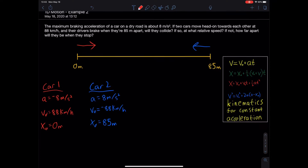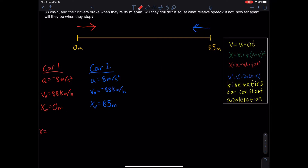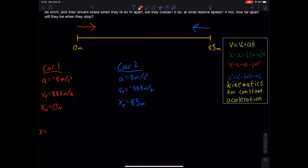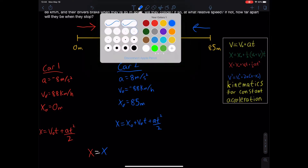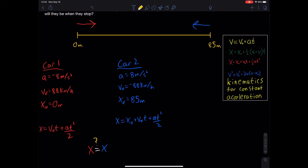The position function for car one is: x = v₀t + ½at² (initial position is zero). For car two: x = x₀ + v₀t + ½at². The question is whether red car one's position will ever equal blue car two's position. To find out, we set these two equations equal to each other.